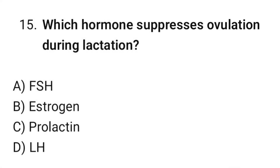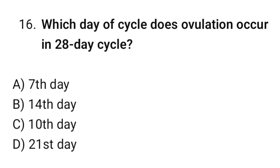Question No. 15: Which hormone suppresses ovulation during lactation? The correct option is C. Prolactin. Question No. 16: Which day of the cycle does ovulation occur in a 28-day cycle? The correct option is B. 14th day.